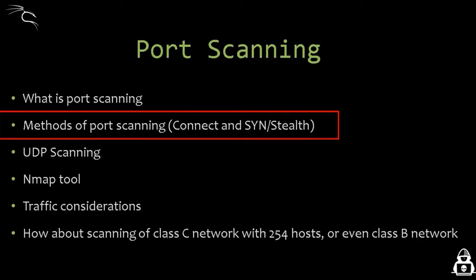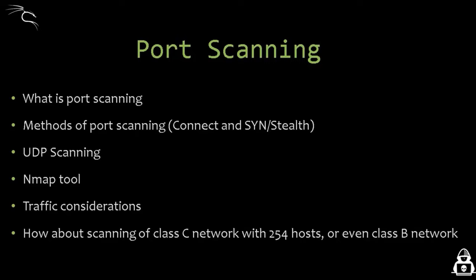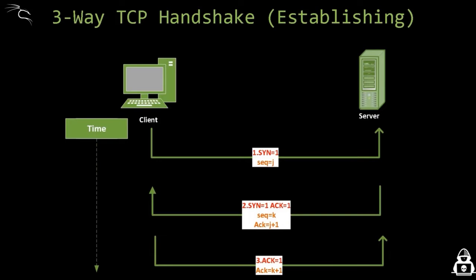The first method is called Connect and the second method is called SYN/Stealth. The Connect method is purely based on the three-way TCP handshake mechanism. Connect port scanning involves attempting to complete a three-way handshake with the target host on the specific port. If the handshake is fully completed, this indicates that the port is open.